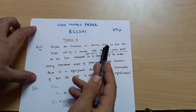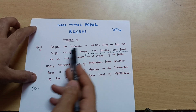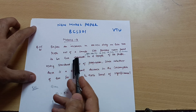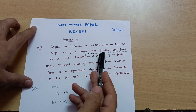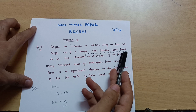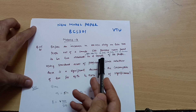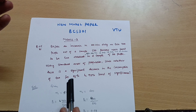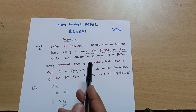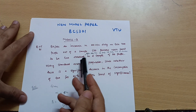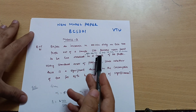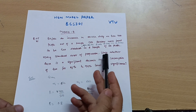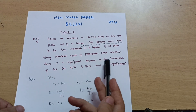Before an increase in exercise duty on tea, 400 people out of a sample of 500 persons were found to be tea drinkers. After an increase in duty, 400 people were tea drinkers in a sample of 600 people. Unlike previous problems based on only one sample, here we are dealing with two samples.